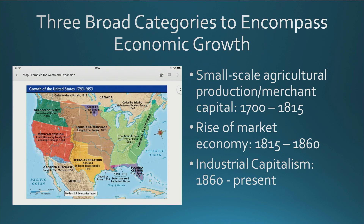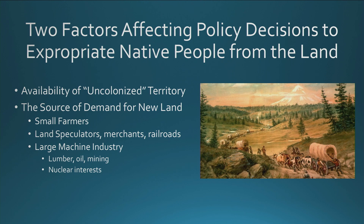Within these three broad categories, there are two factors that affect policy decisions to expropriate Native peoples from their land. These two factors are very important in understanding how people are going to lose their land base. The two factors affecting the policy decisions are the availability of uncolonized territory, and the source of demand for the new lands.